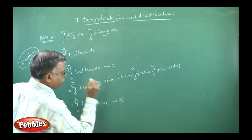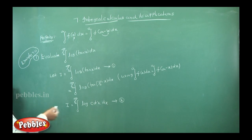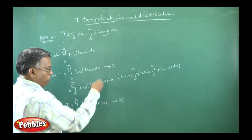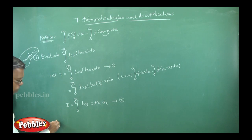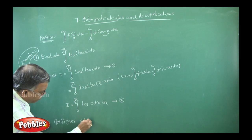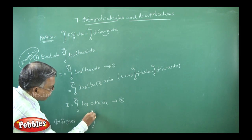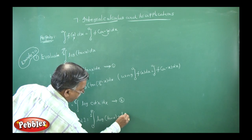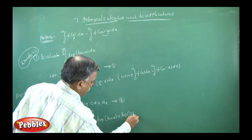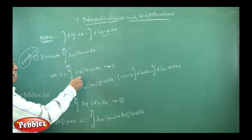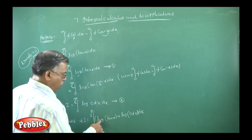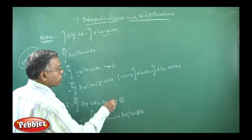Let this second integral also equal i (it is still i). Label the first equation as (1) and the second as (2). Adding (1) and (2): i plus i gives 2i, which equals the integral from 0 to π/2 of [log(tan x) plus log(cot x)] dx. Now we use the logarithm property: log m plus log n equals log(mn).